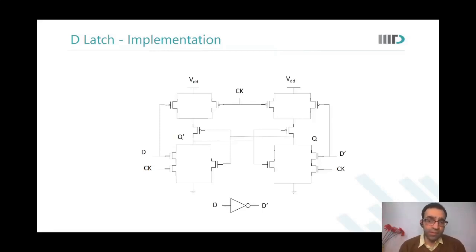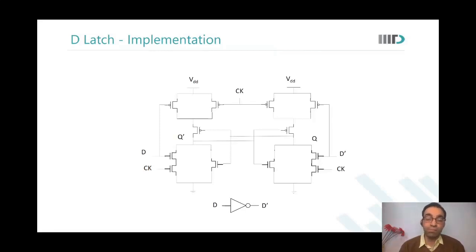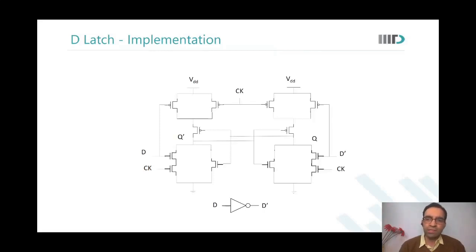We wanted a 6-transistor memory cell, but this is the simplest clocked storage element we have — 14 transistors. Everyone said SRAMs would have 6-transistor cells. So how do you reach 6 transistors?